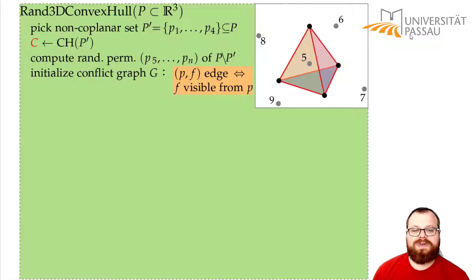First, we want to create the conflict graph. So we have an edge in the conflict graph if and only if a face is visible from the point, as we defined in the previous part.